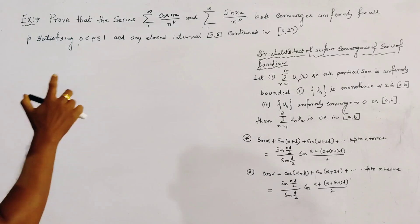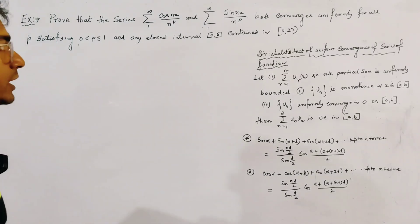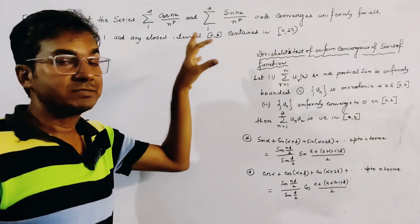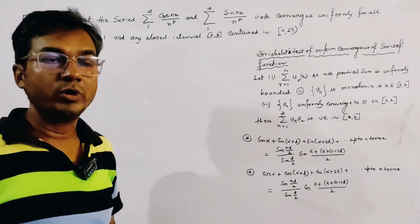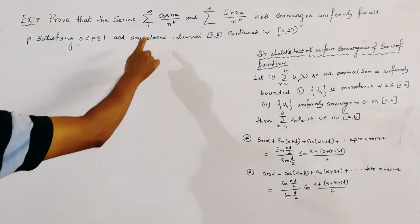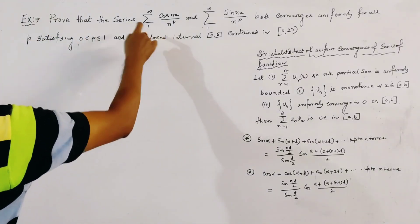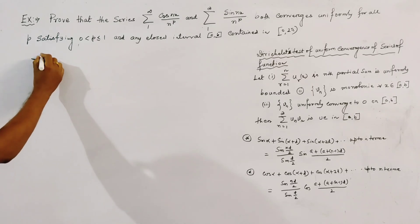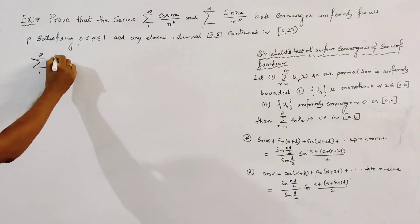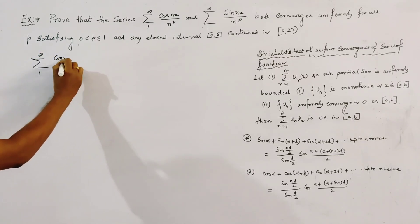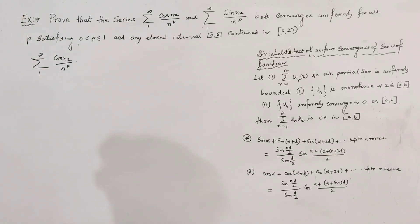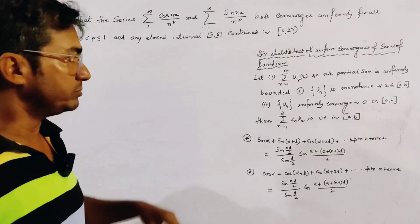We will solve only the first problem here and leave the second as a homework exercise. We take the first problem given by summation 1 to infinity of cos(nx)/n^p. For the whole problem, we use three results.